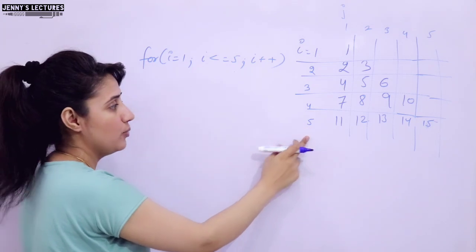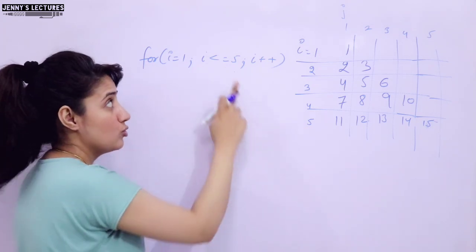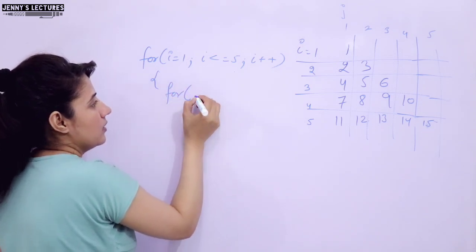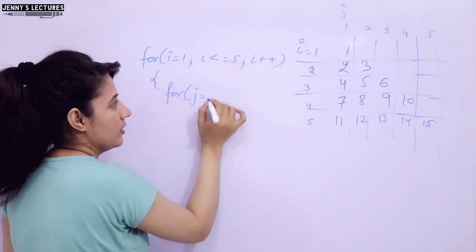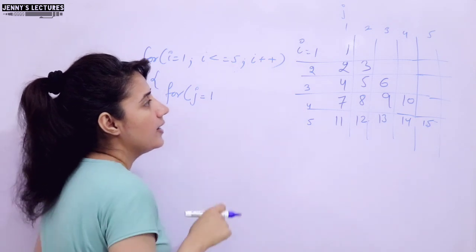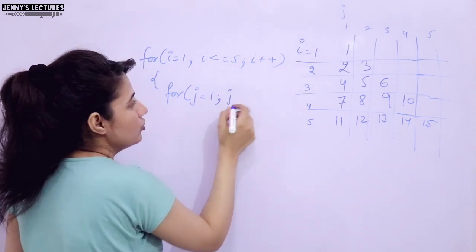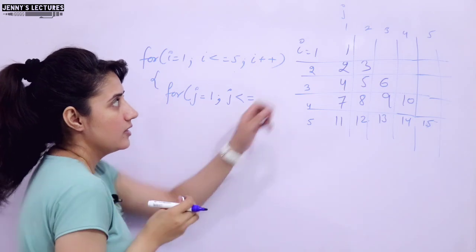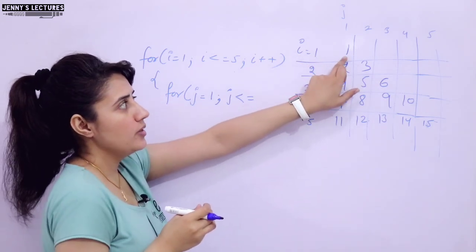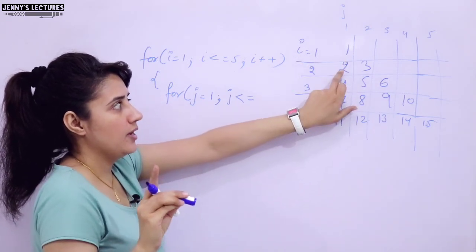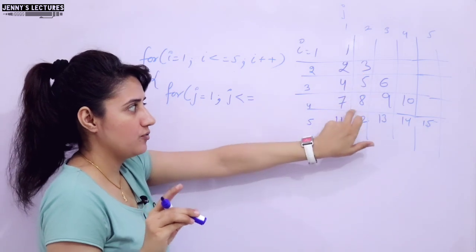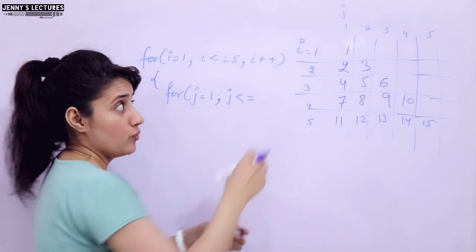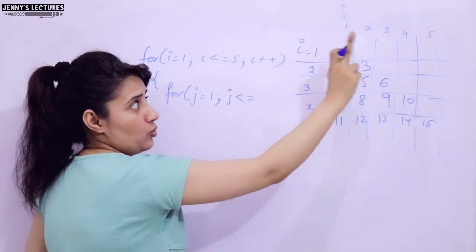The number of lines should be 5. Whenever I value becomes 6, just stop. So I should be less than equal to 5. Now for the inner loop J, J is equal to 1. What should be the condition? When I value is 1, J should execute only one time. When I is 2, J executes 2 times; when I is 3, J executes 3 times; 4 times and 5 times — it's changing.